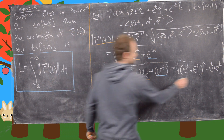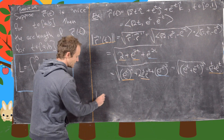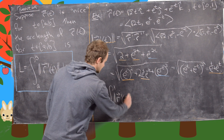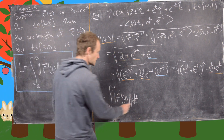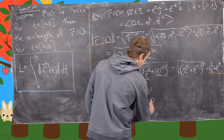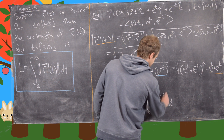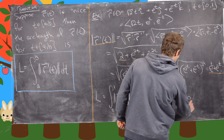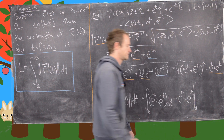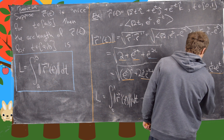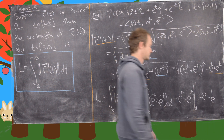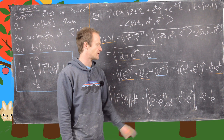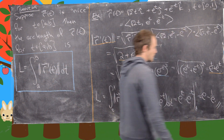Now we put this inside the integral from 0 to 1. So the arc length equals the integral from 0 to 1 of the magnitude of r prime of t dt, which equals the integral from 0 to 1 of (e to the t plus e to the minus t) dt. Taking antiderivatives, we get e to the t minus e to the minus t evaluated from 0 to 1. Plugging in 1 gives e minus 1 over e, and plugging in 0 gives 1 minus 1, which is 0. So the final answer is e minus 1 over e.